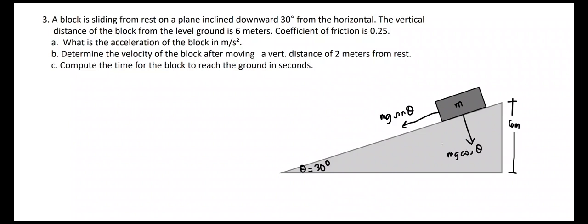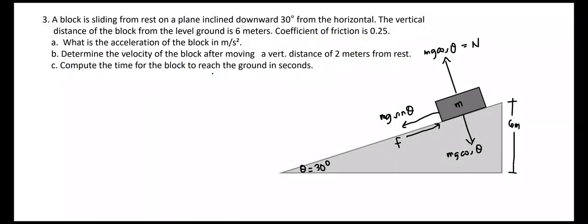To maintain equilibrium, the block also experiences a normal force going upward perpendicular to the surface, which also equals mg cosine theta — this is the normal force acting on the body due to the surface. To oppose the force of mg sine theta, there is also a friction force F experienced by the body due to the surface. Since the body is moving downward, it will experience an overall net force, which equals mass times the acceleration of the body.